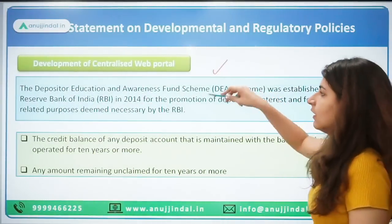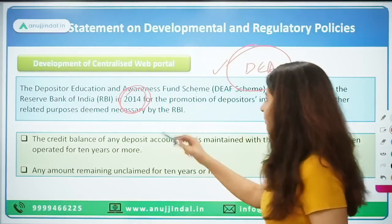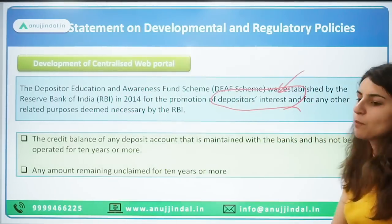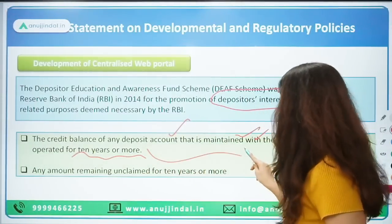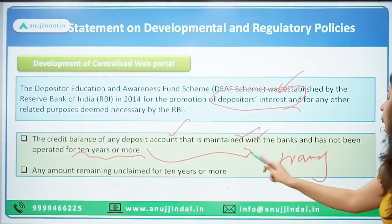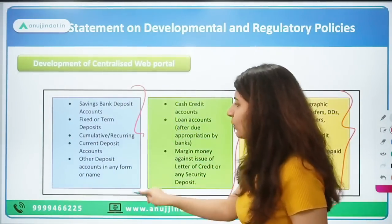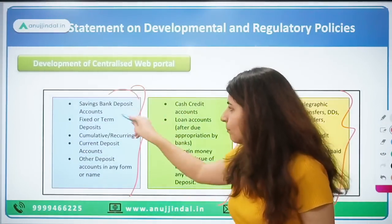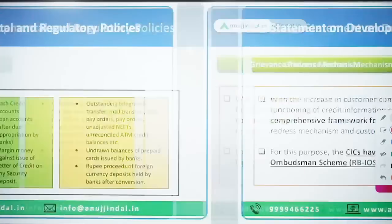The DEAF scheme was established by RBI in 2014 for the promotion of depositors' interest and education and awareness. The credit balance of any deposit account maintained with banks that has not been operated for 10 years or more will be transferred to DEAF. This includes savings accounts, FDs, current accounts — any deposit account where the amount remains unclaimed for 10 years.